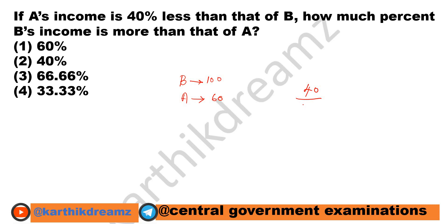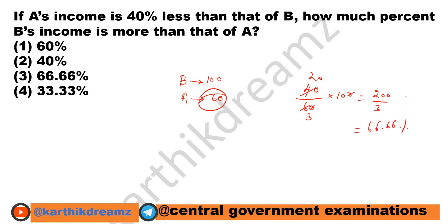Therefore in the denominator, we will have to put A's income, since that is what we are comparing against. So that is 40 divided by 60, into 100, which gives us 200 by 3, which is equal to 66.66 percentage. So the answer is 66.66 percentage.